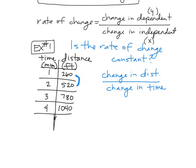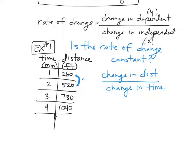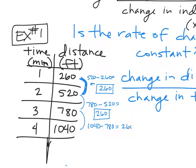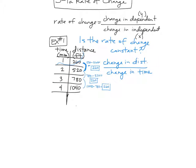Right. So that's what we're going to do. We're going to go 520 minus 260, and what I get is 260. Then I'm going to do 780 minus 520, that equals 260. Then I'm going to subtract here, 1040 minus 780, that equals 260. So that's a really good sign that my change in my distance each time was 260.